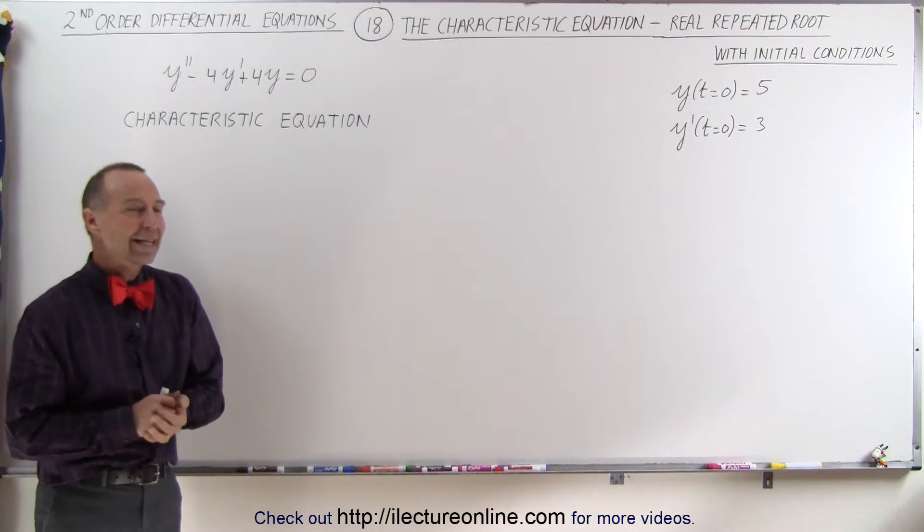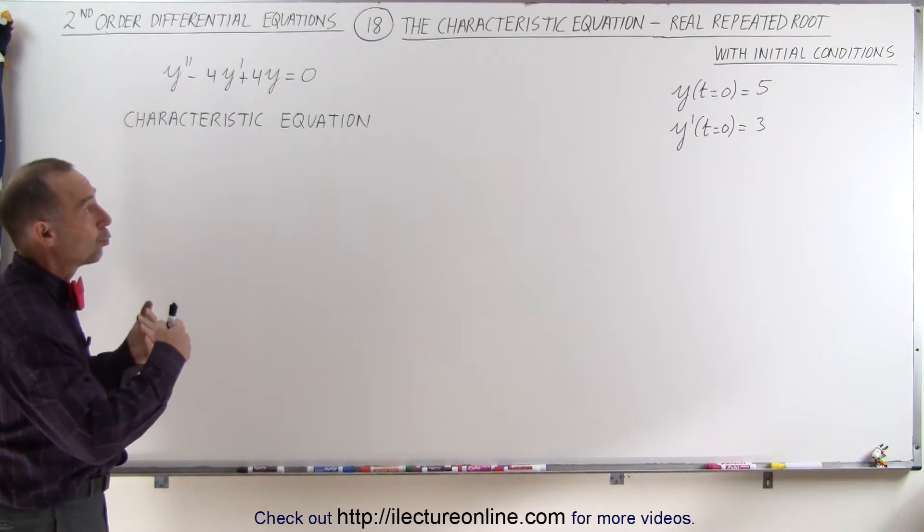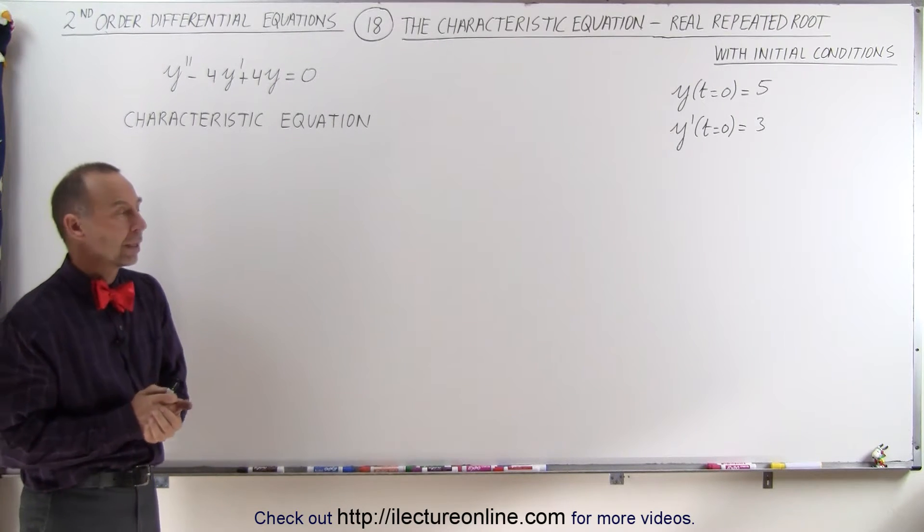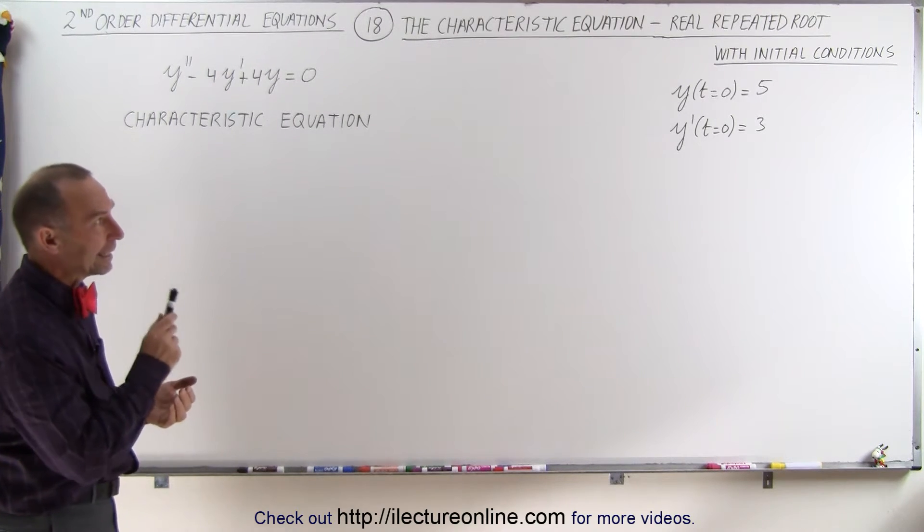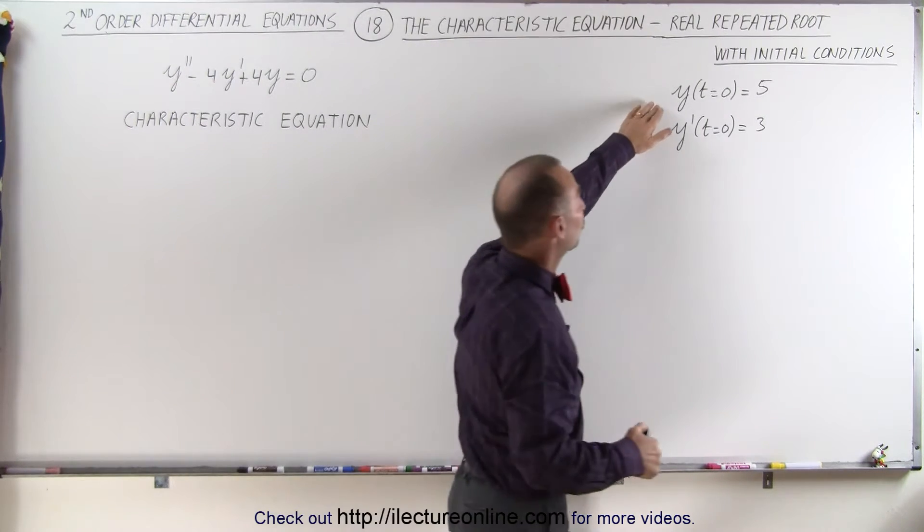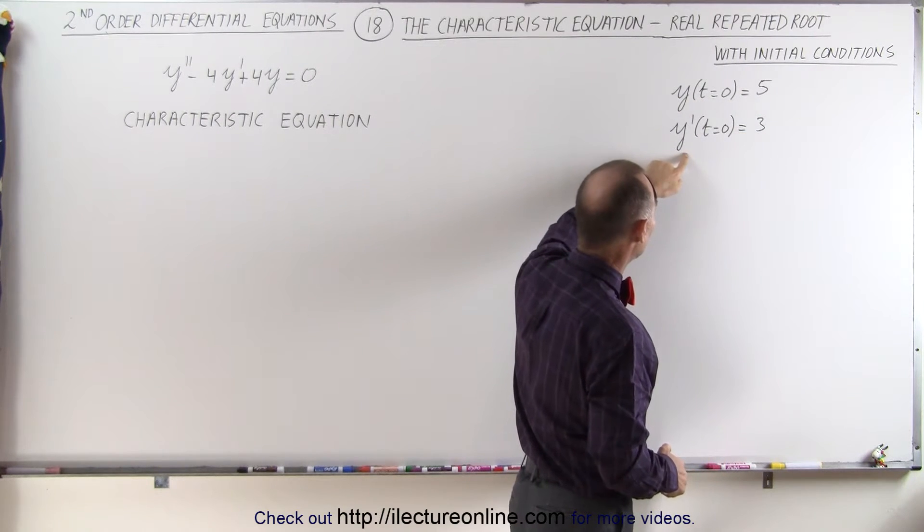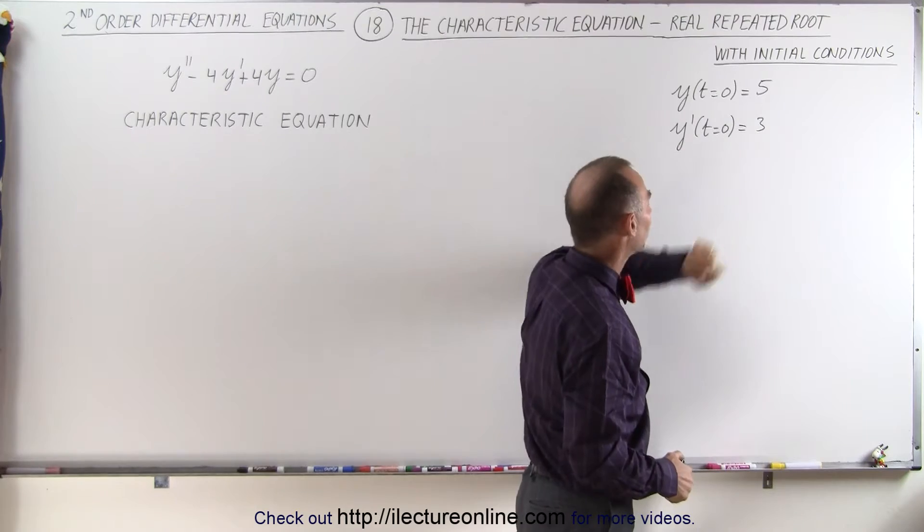Welcome to ILectureOnline. Here we have another differential equation which has real repeated roots. But in this case we're also given the initial conditions of the solution. The solution evaluated at t equals 0 is equal to 5, and the derivative of the solution at t equals 0 is equal to 3.